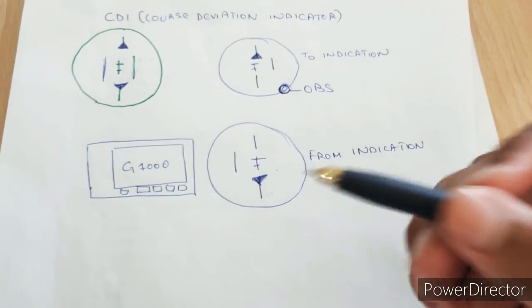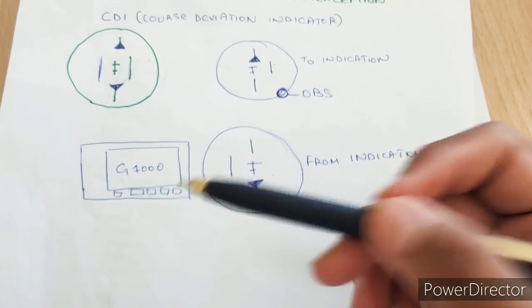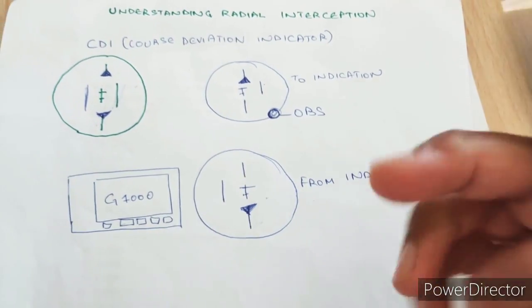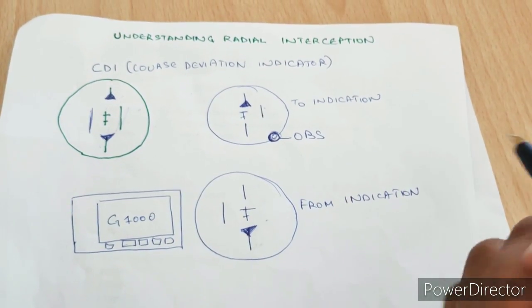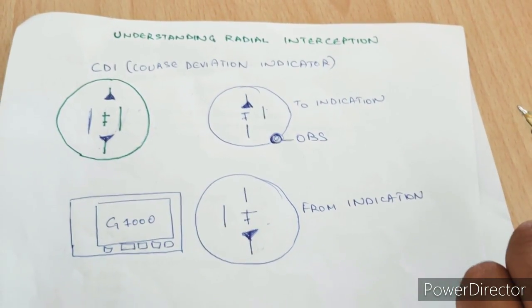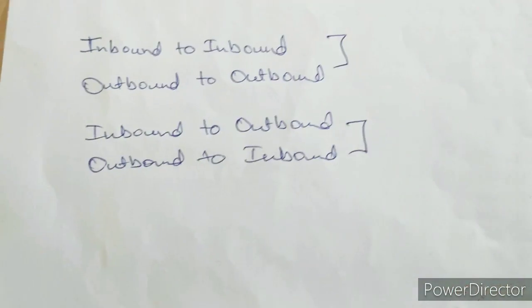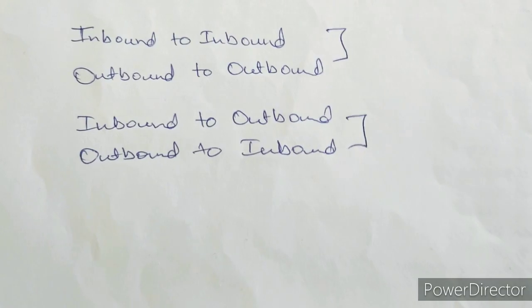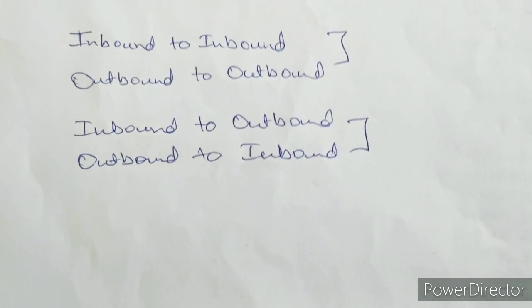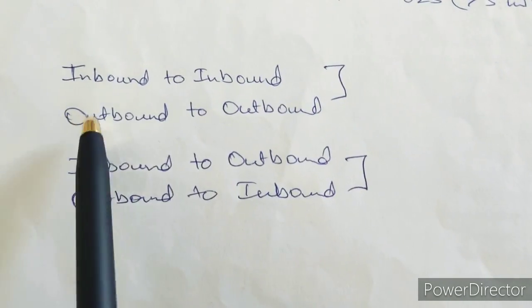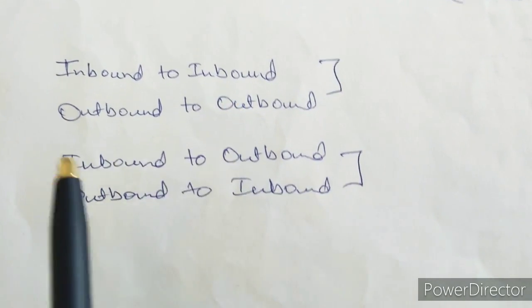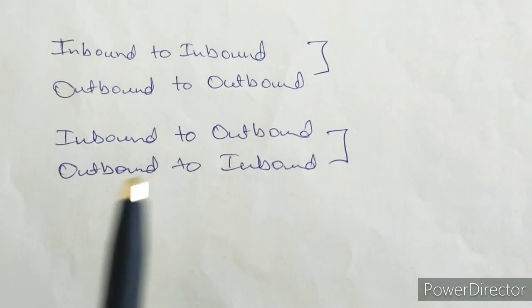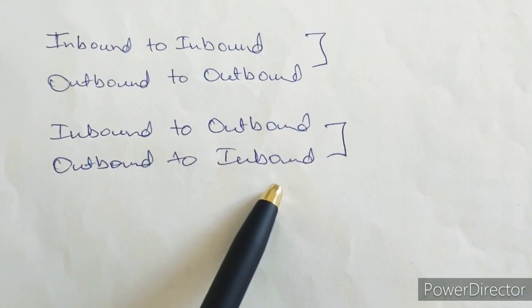If you are flying in the modern Garmin 1000 cockpit, you can just select the soft key that says OBS and then change your course according to your choice. There are four different types of radial interception that we follow when doing instrument flying: inbound to inbound, outbound to outbound, inbound to outbound, and outbound to inbound.